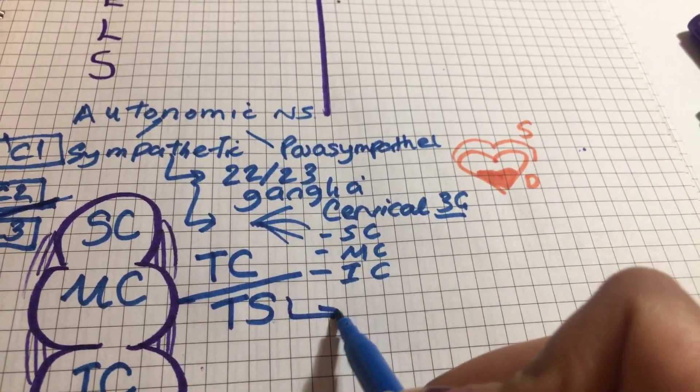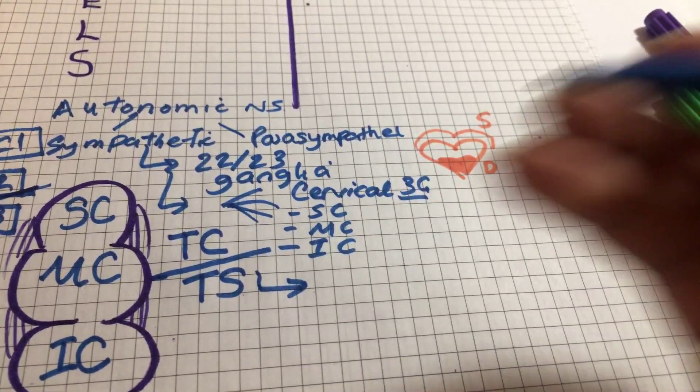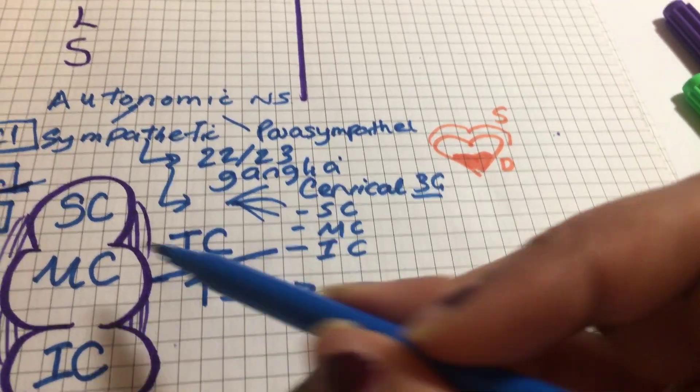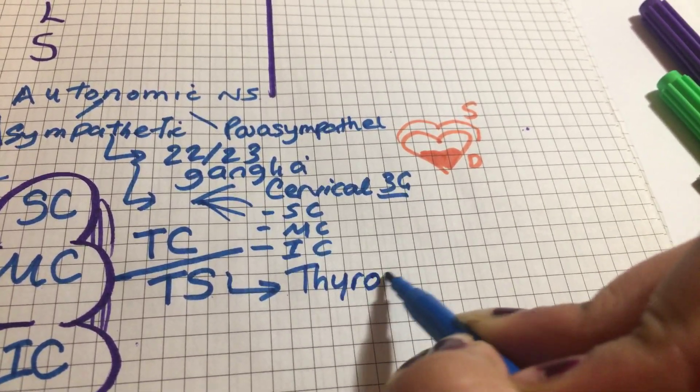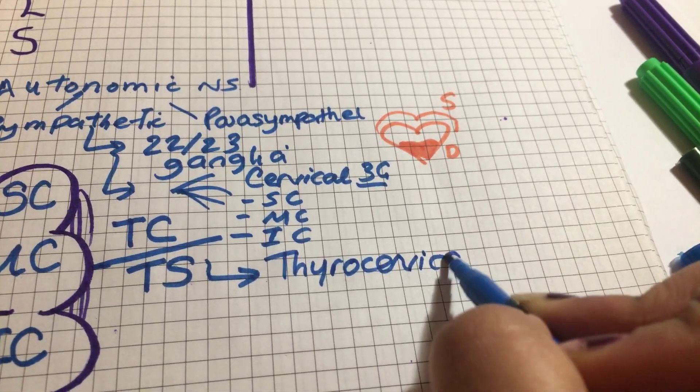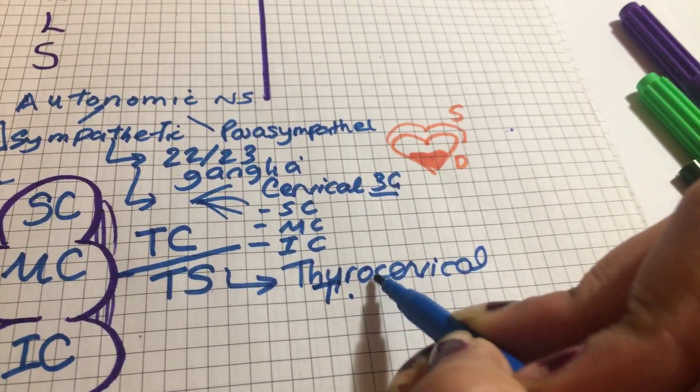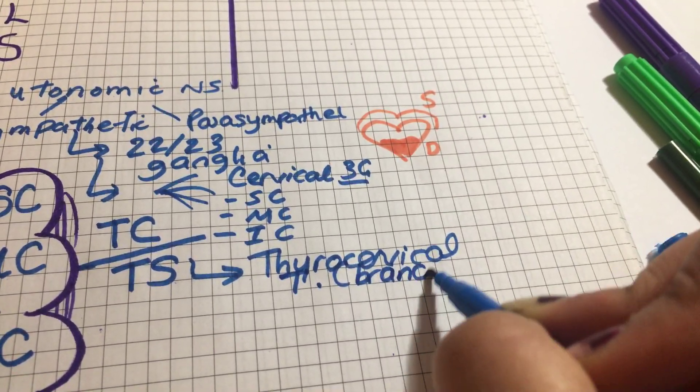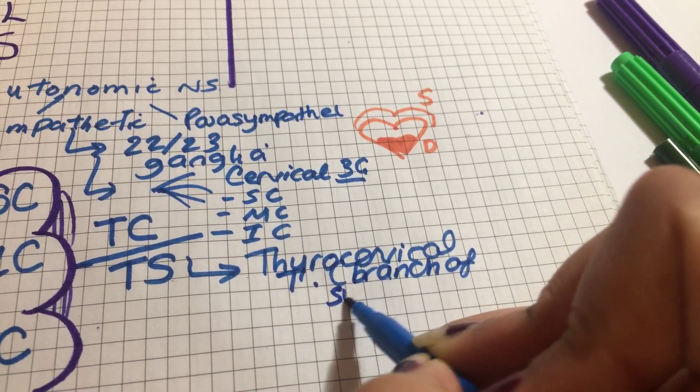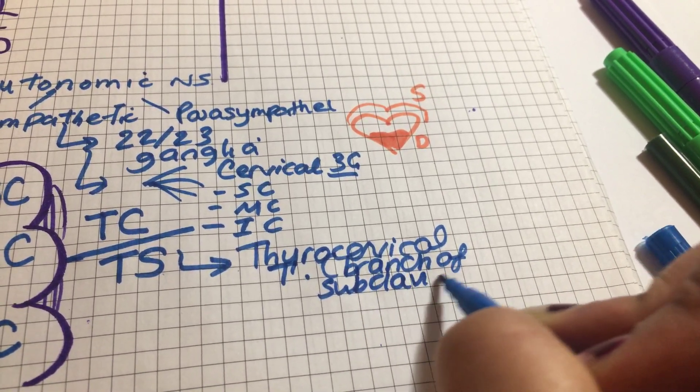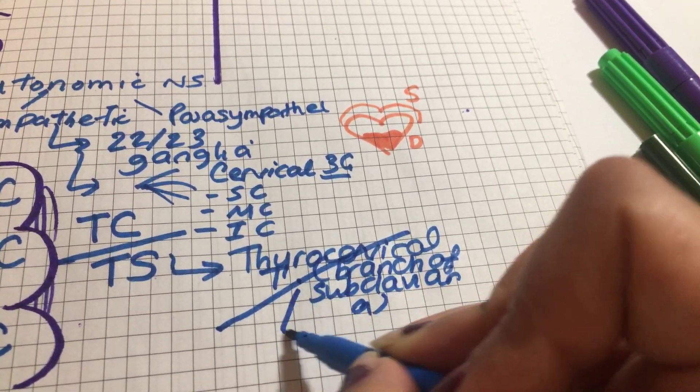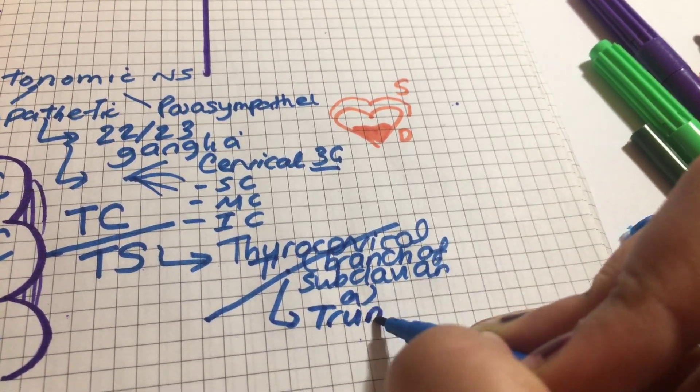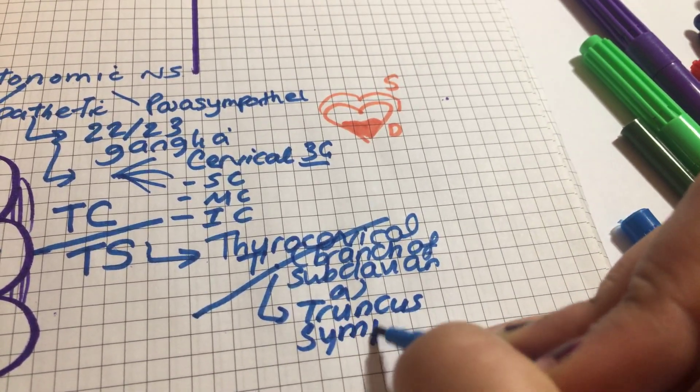The way that our professor described it is that the middle cervical ganglion is located where the thyrocervical trunk, a branch of the subclavian artery, crosses with truncus sympatheticus, the sympathetic trunk.